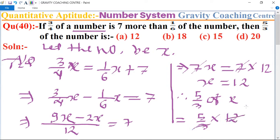12 cancels to 4, and 5 × 4 = 20, which is the required answer. So option (d) is the right answer.